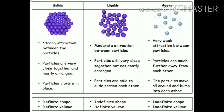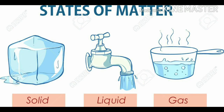Solids mein molecules bahut zyada strongly sticked hote hain ek doosre se, so that's why solids are hard. Inki volume bhi fixed hoti hai aur inki shape bhi fixed hoti hai. Liquid mein thoda sa space hota hai, liquid ki shape fixed nahi hoti — they take the shape of the container in which they are poured. Liquid ko hum jis container mein rakhenge, usi ki shape ho jaegi, aur liquid ki volume fixed hoti hai. Gas ke molecules bahut door-door hote hain, aur inke na toh fixed volume hota hai na fixed shape.